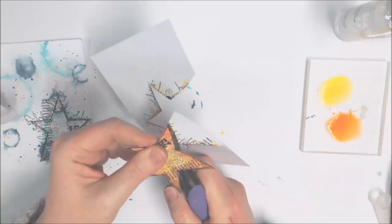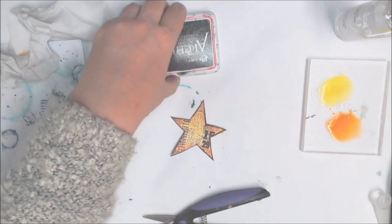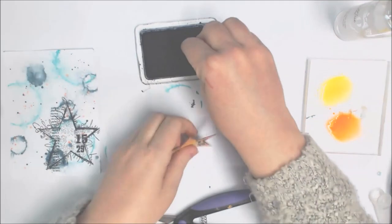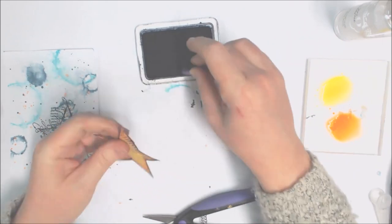I'm just cutting out my star, I'm not being overly careful, but just going as close to the edge as I can and then inking around the edge.